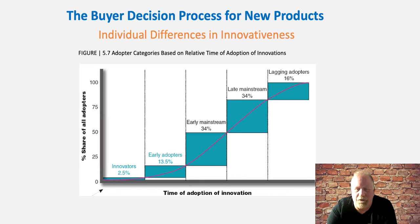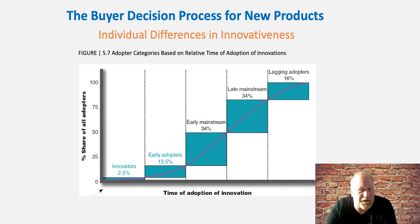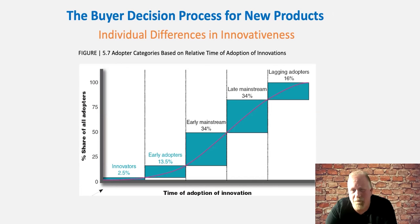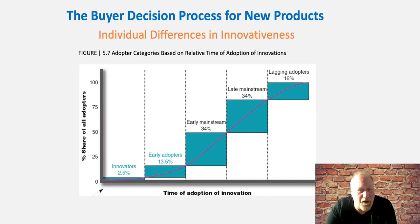Next is the early mainstream — 34% of people who want to be part of a trend. Having new technology and innovation is often part of their identity, and they don't want to be late to adopt things. Then we have the late mainstream — individuals who still want to be part of it but are very late to act, sort of forced into this action. And finally, lagging adopters — individuals who wait until the last minute, perhaps until their old smartphone can no longer handle things properly. Do you know friends or family that fall within each of these categories? What are the differences in the way they buy and how they would be influenced by marketing campaigns?